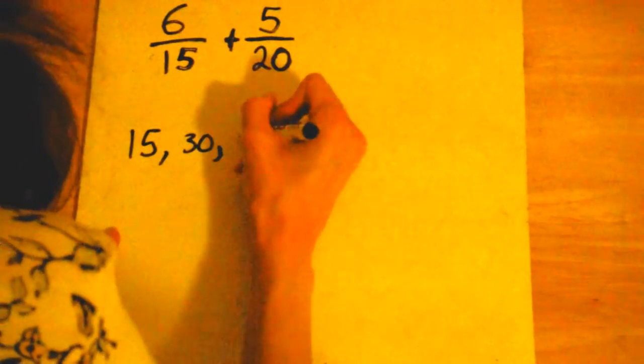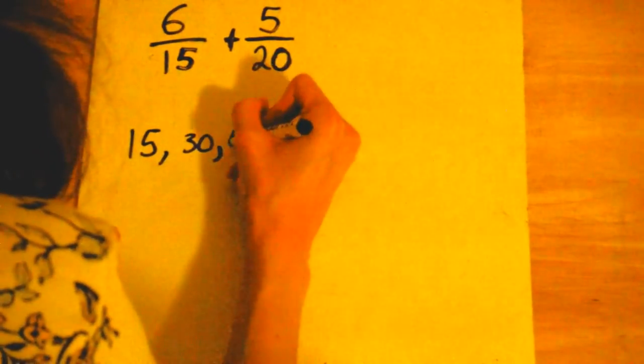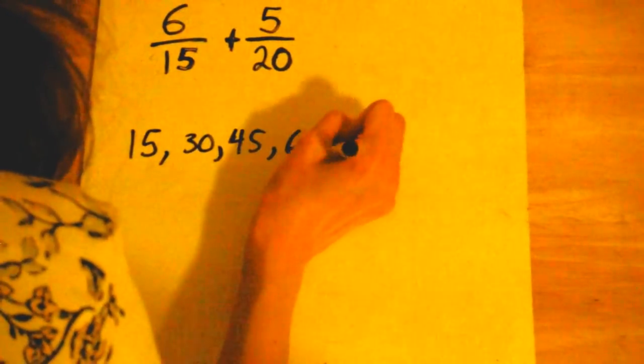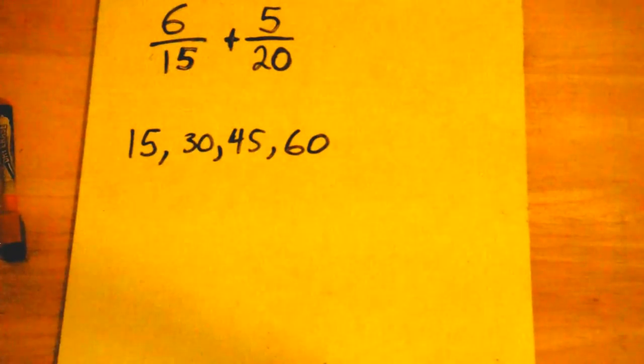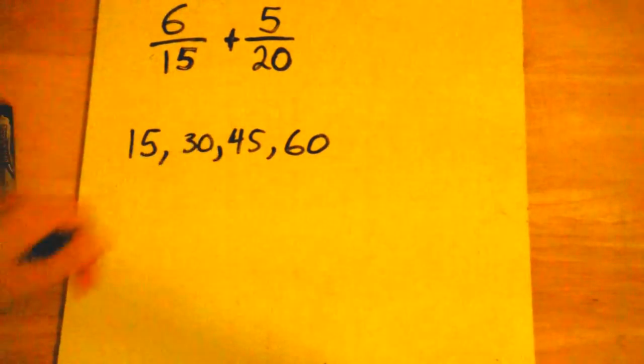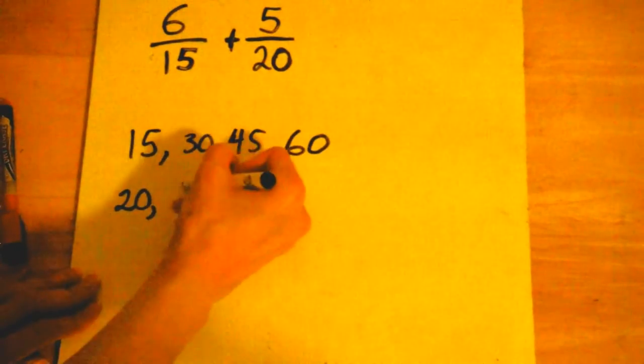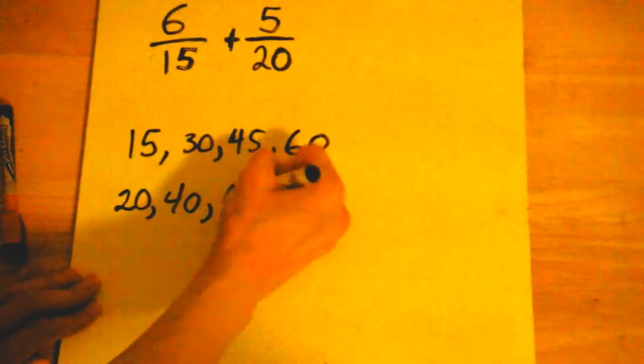Fifteen, thirty, forty-five, sixty. Okay, and now I'm going to take my multiples of twenty. So we're going to start off with twenty, then forty, then sixty.